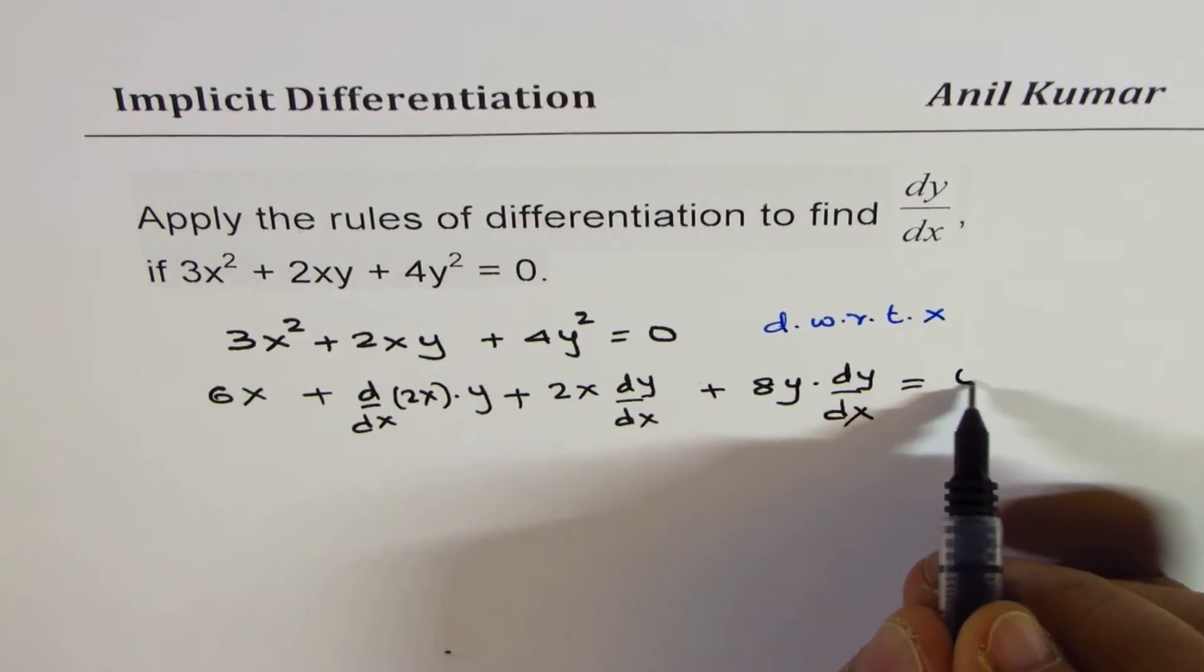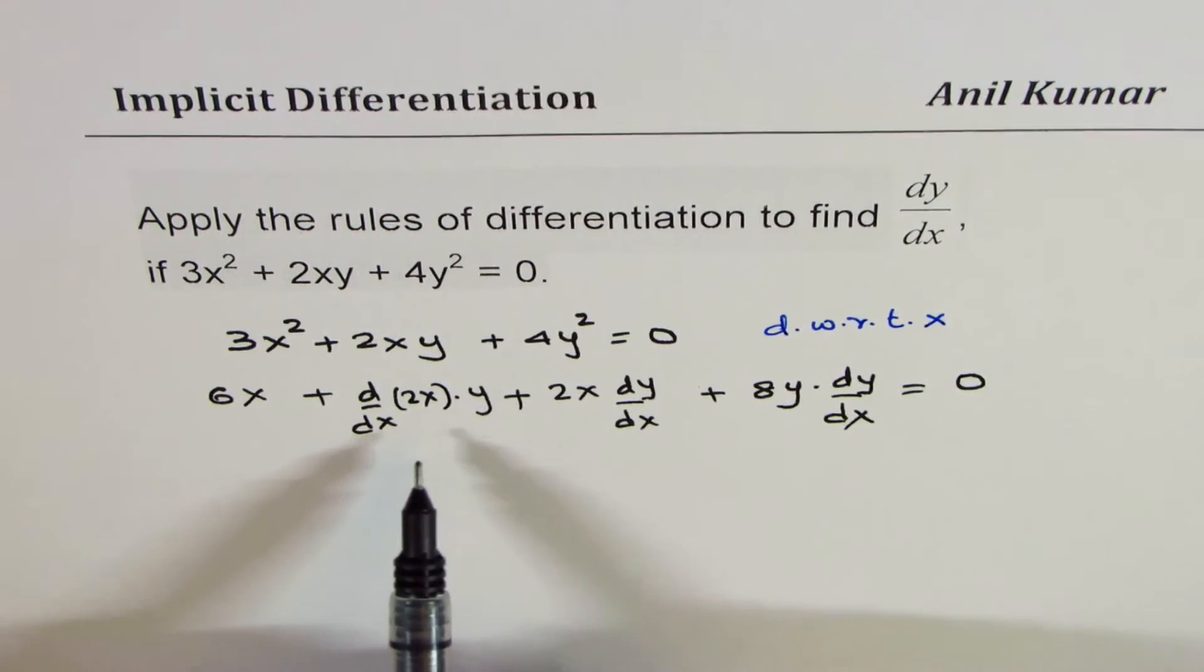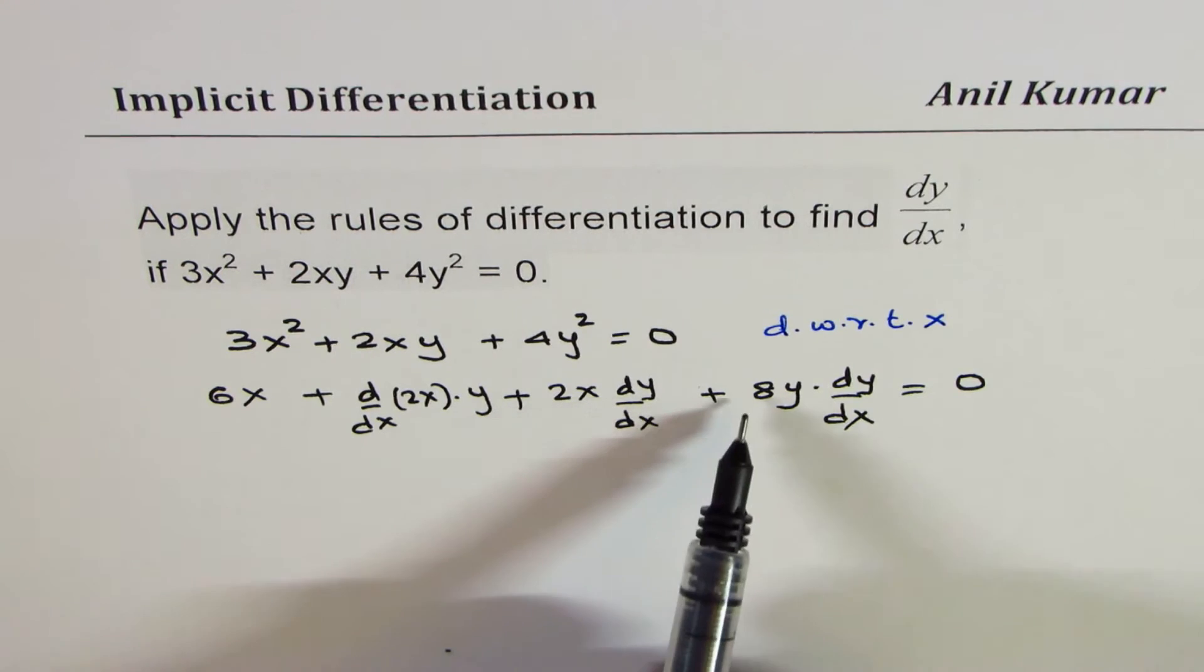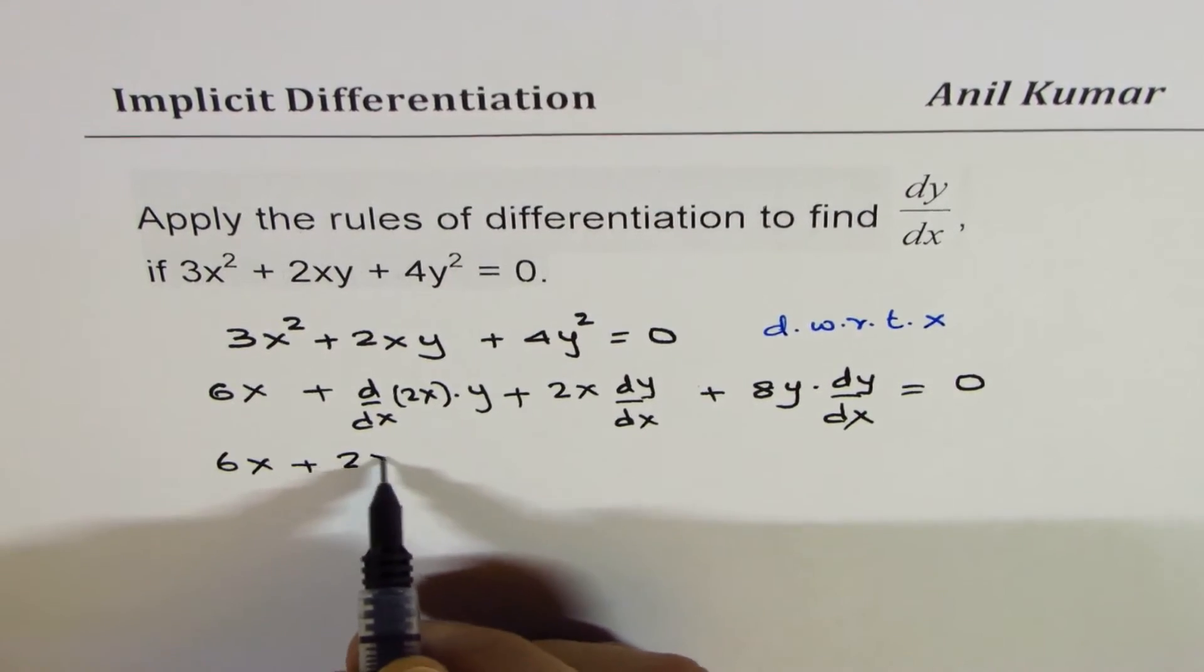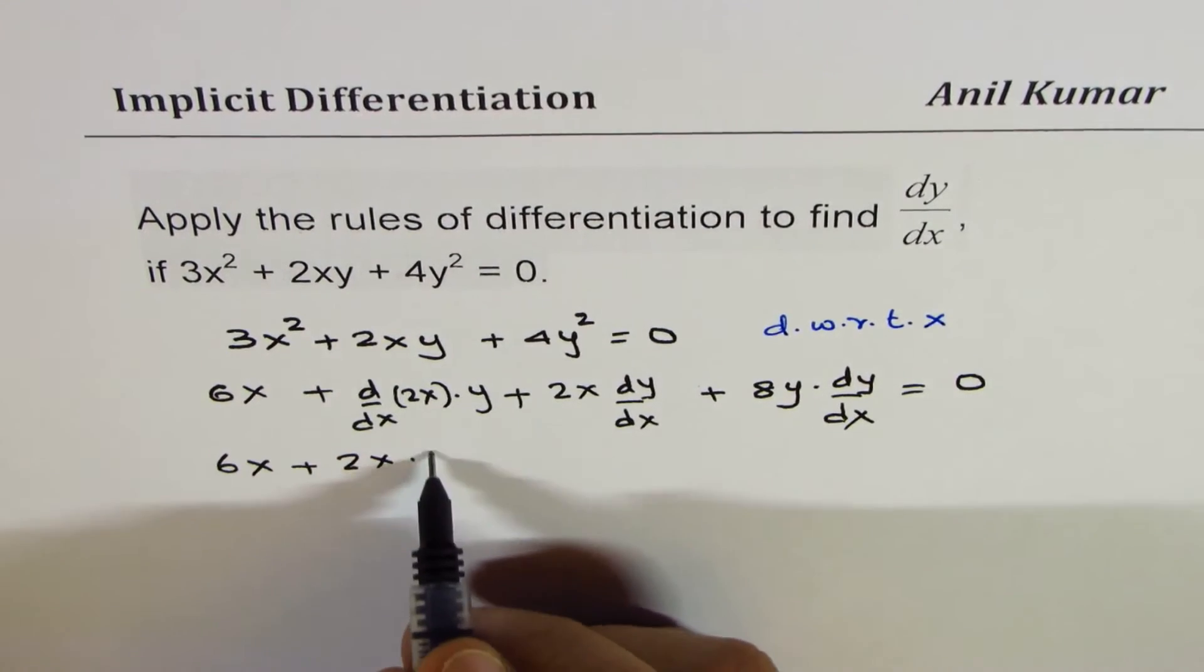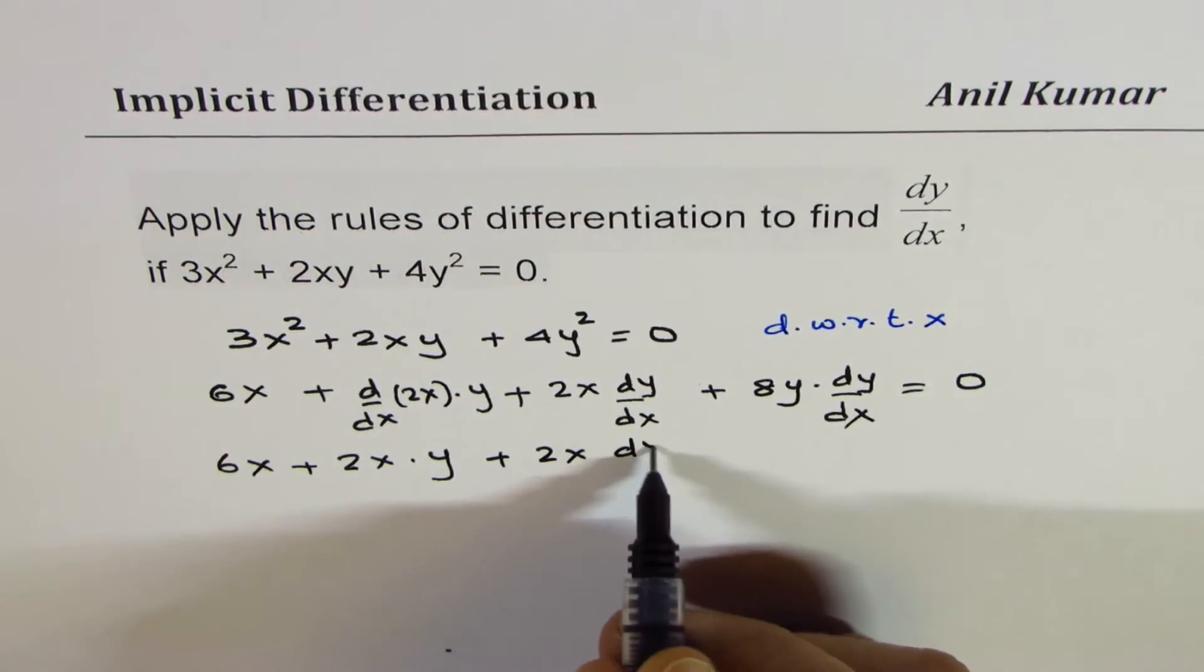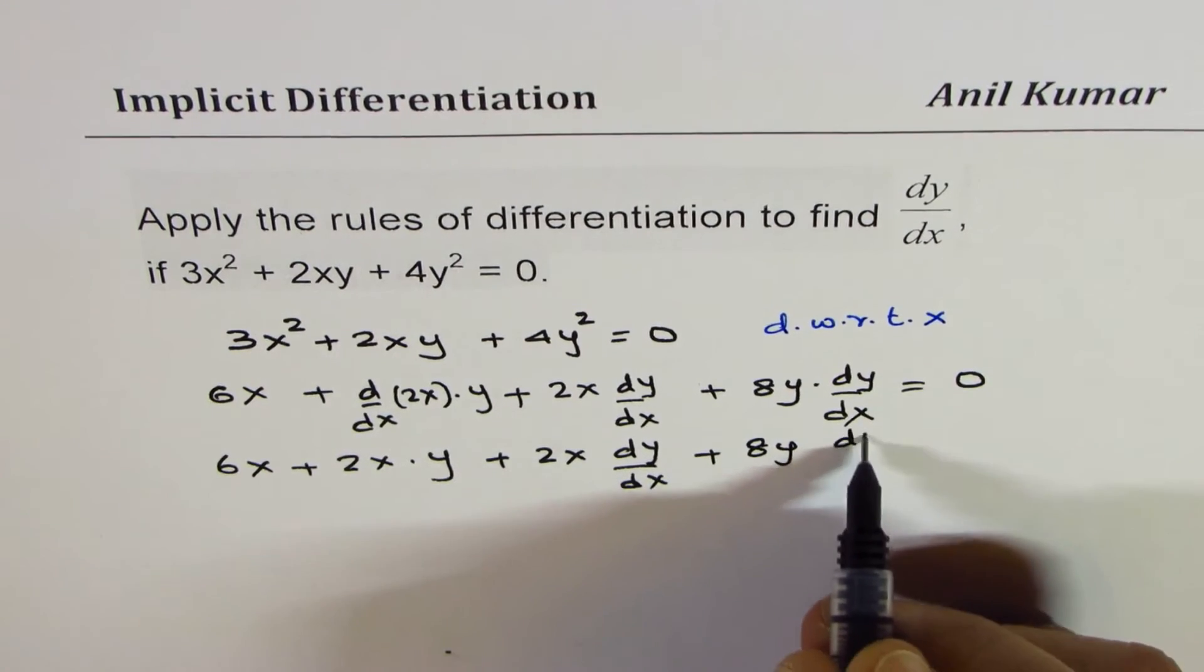Derivative of 0 is 0. Now we'll actually differentiate 2x and then we have a term here dy/dx with 2x and 8y. These will be combined. So we get 6x plus 2y plus 2x dy/dx plus 8y dy/dx equals 0.